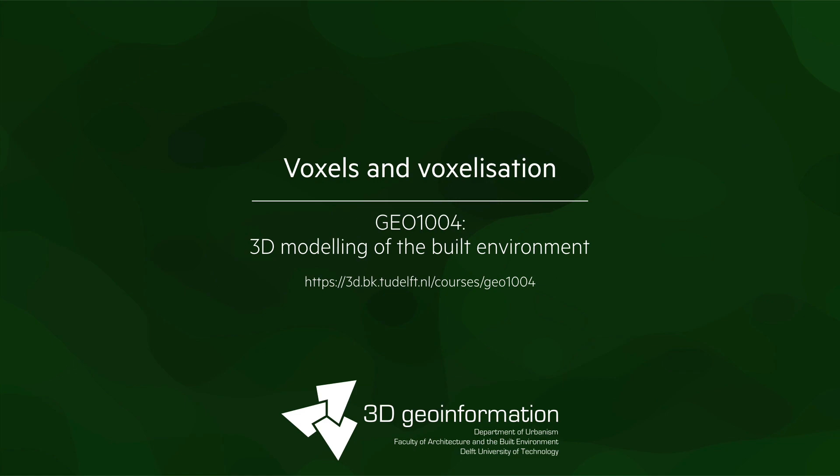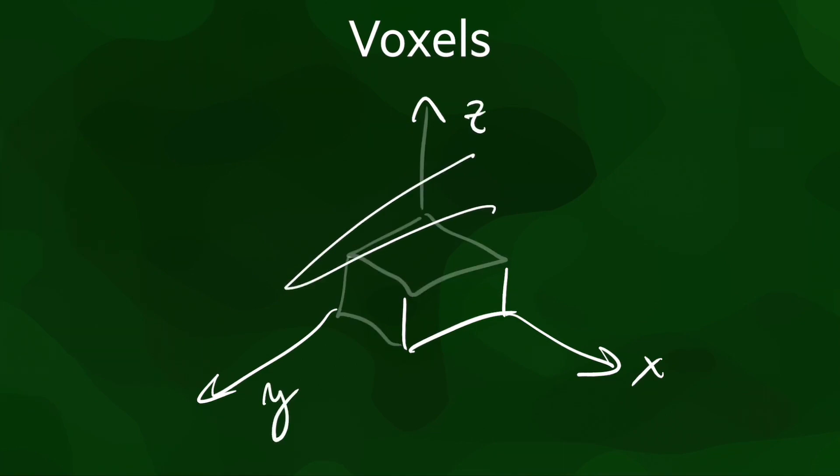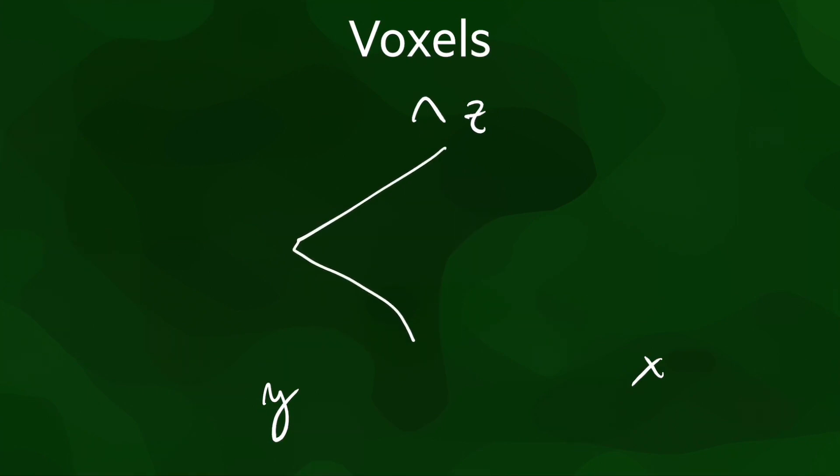The topic of today's lesson is voxels and voxelization. Voxels are the 3D equivalent of pixels in 2D. They are axis-aligned boxes, usually of the same size, which are then assembled into 3D grids.